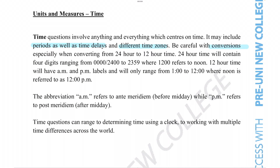Be careful with conversions, especially when converting from 24-hour to 12-hour time. 24-hour time contains four digits ranging from 0000 to 2359, where 1200 refers to noon. 12-hour time will have AM and PM labels and will only range from 1 to 12, where noon is referred to as 12 PM. The abbreviation AM refers to ante meridiem, which is Latin for before midday, and PM refers to post meridiem, which is Latin for after midday.